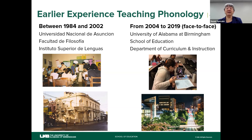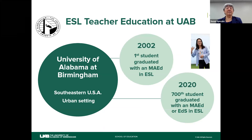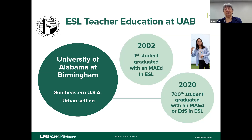In fall 2020 all pair and group work was done online because the course moved online. The bottom right picture shows the nucleus of the University of Alabama at Birmingham — 200 square blocks in a busy downtown street. At UAB the ESL Teacher Education program started around 2000, with the first graduate receiving a master's degree in 2002. In 2020 we reached a milestone of 700 graduate students obtaining a master's or educational specialist degree in ESL.